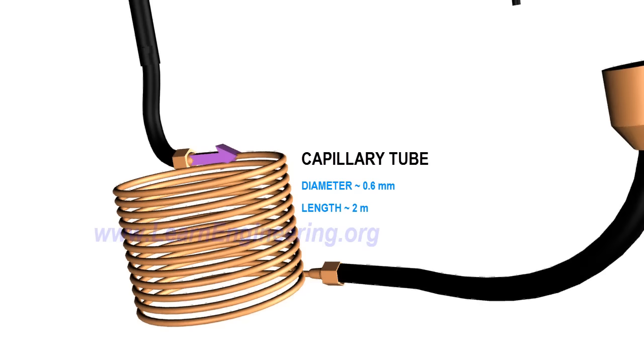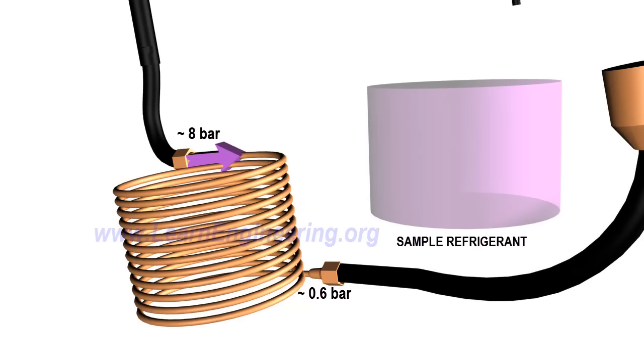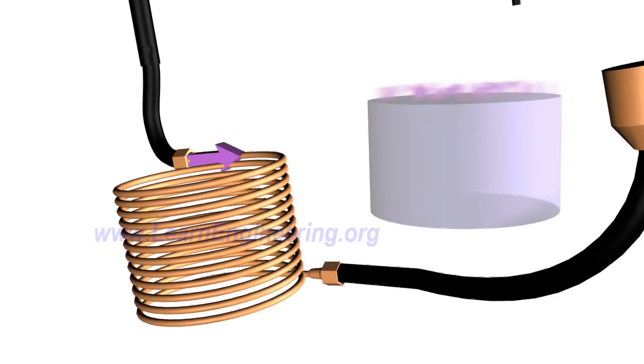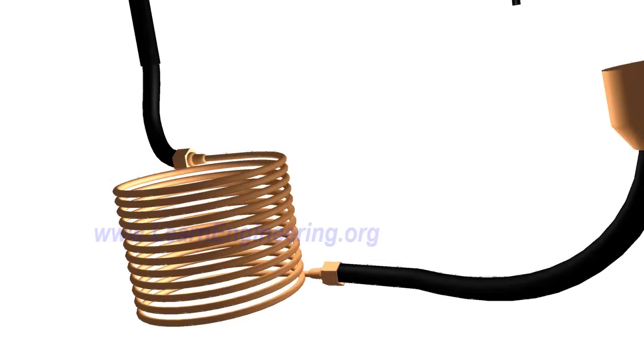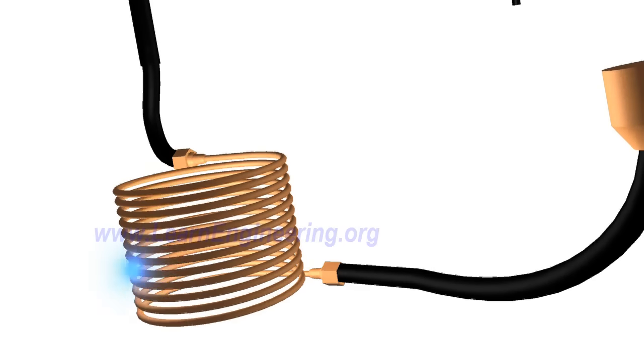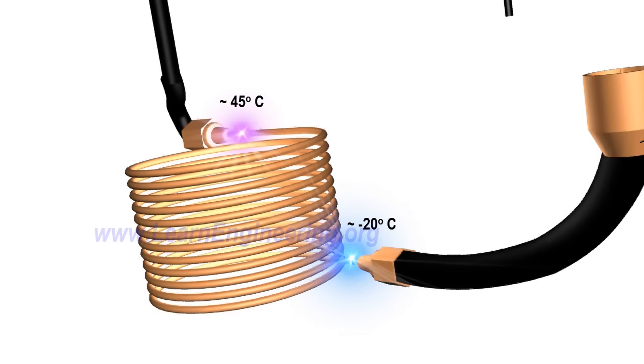The throttling device is an obstruction to the flow which causes tremendous pressure drop. Due to the drop in pressure, the boiling point of refrigerant comes down and it starts evaporating. Heat required for evaporation comes from within the refrigerant, so its temperature drops. If you check temperature across the throttling device, you can notice this drop.